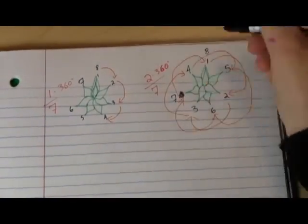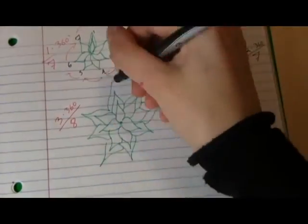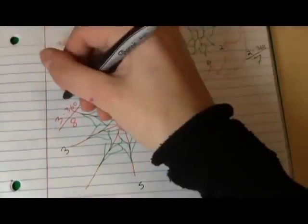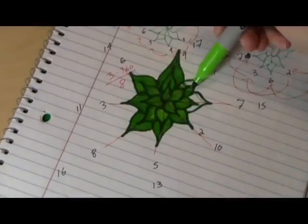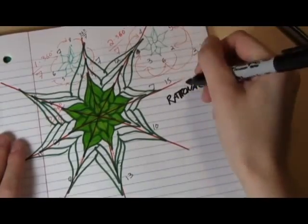But what if there were a fraction that never completely overlapped? For any rational fraction, eventually the star will close. But what if you used an irrational number, the kind of number that can't be expressed as a whole numbered ratio? What if you used the most irrational number?